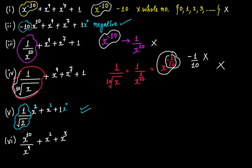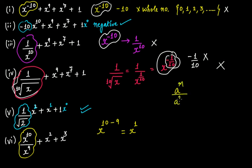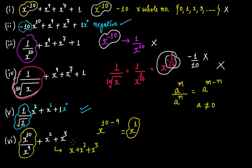What about this case? This is also a polynomial. Why? Because if you look at this term, it is x raised to the power of 10 minus 9, that is x raised to the power of 1. One of the laws of exponents says that a raised to the power of m divided by a raised to the power of n equals a raised to the power of m minus n, where a should not equal 0. So you get x raised to the power of 1, then x squared, plus x cubed. So this is a polynomial.